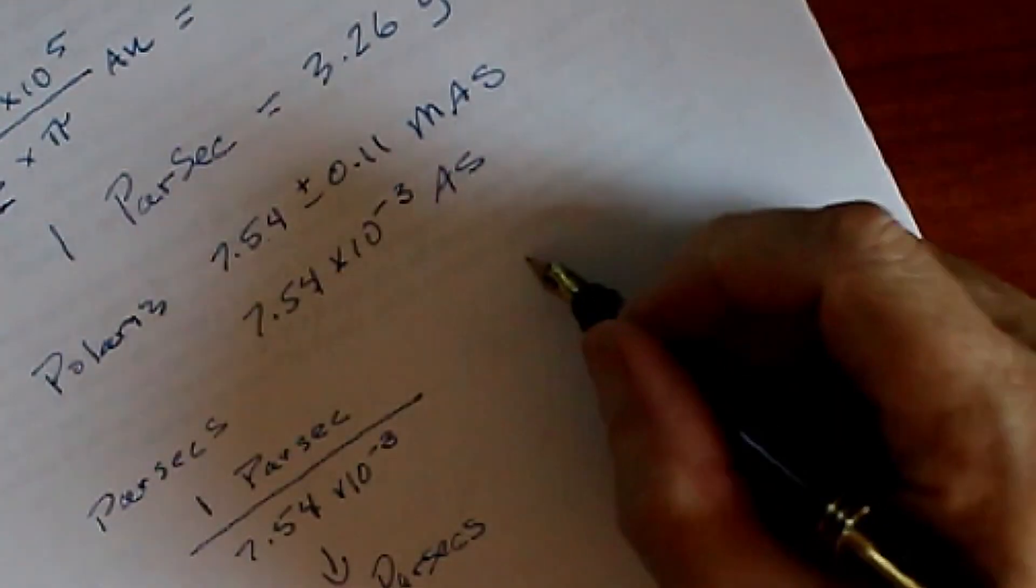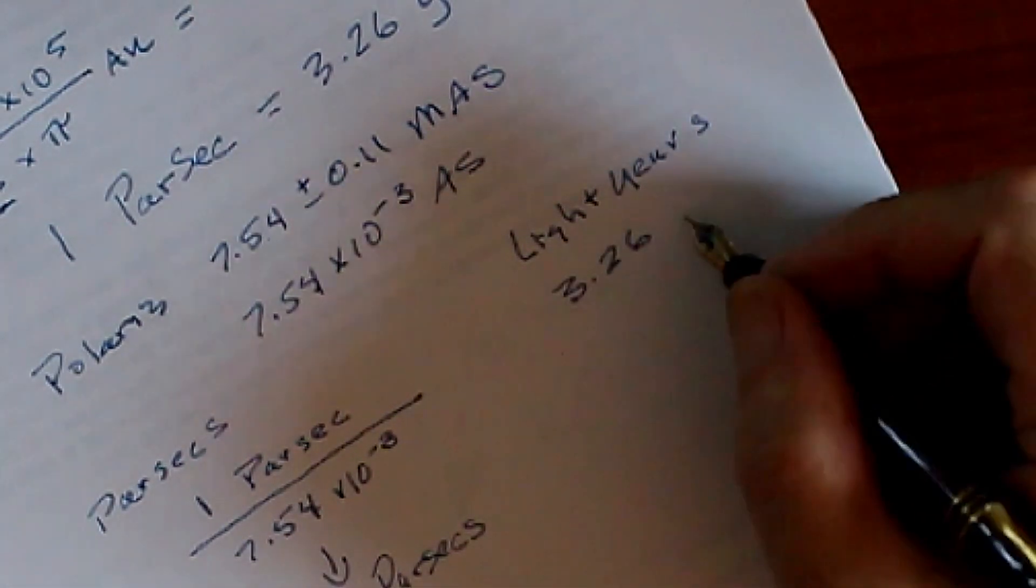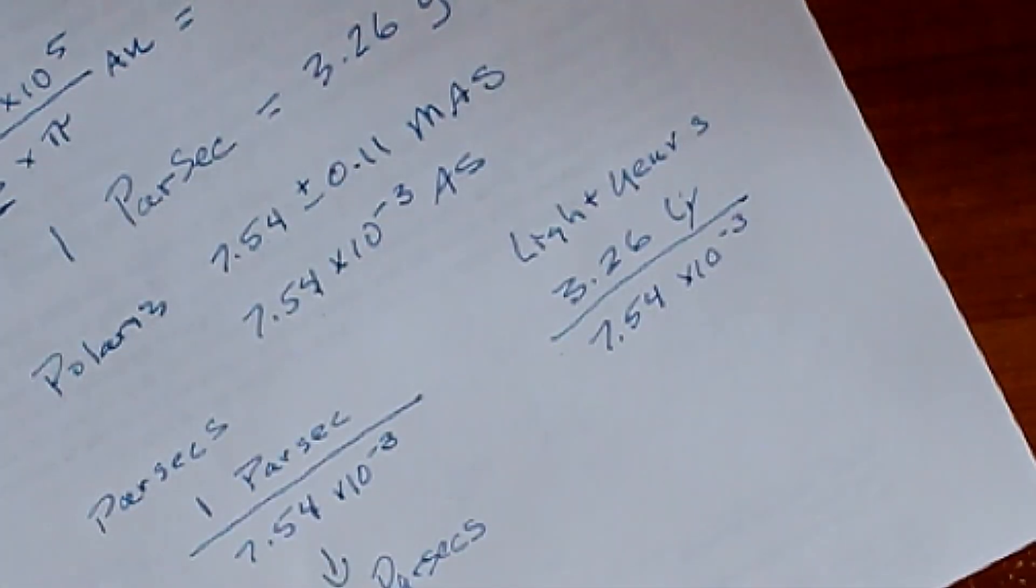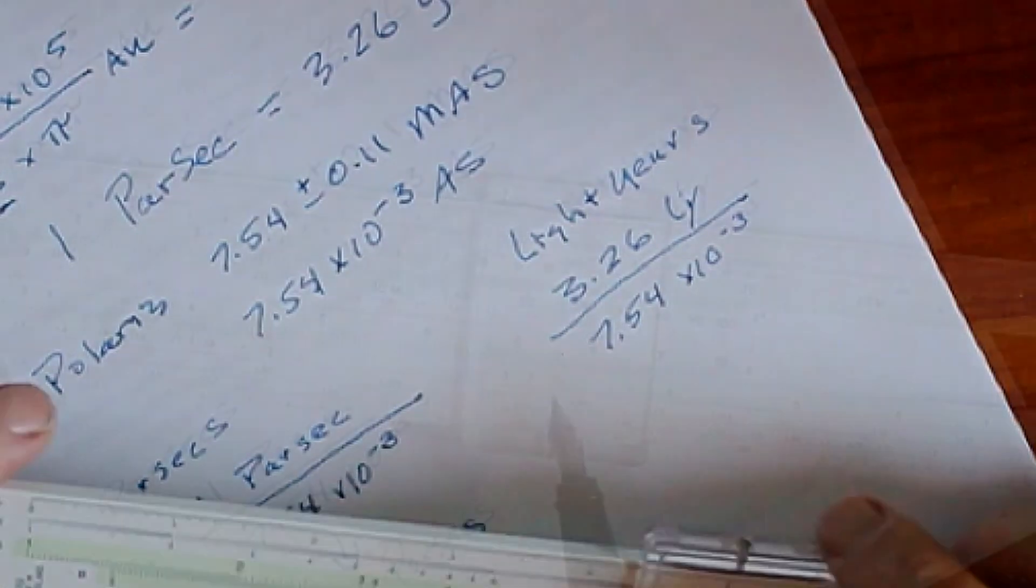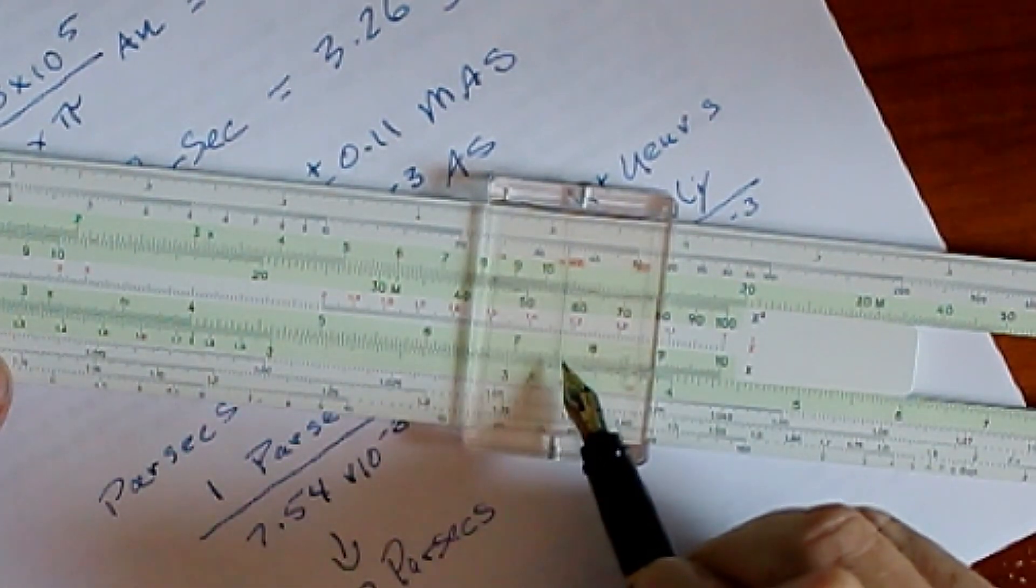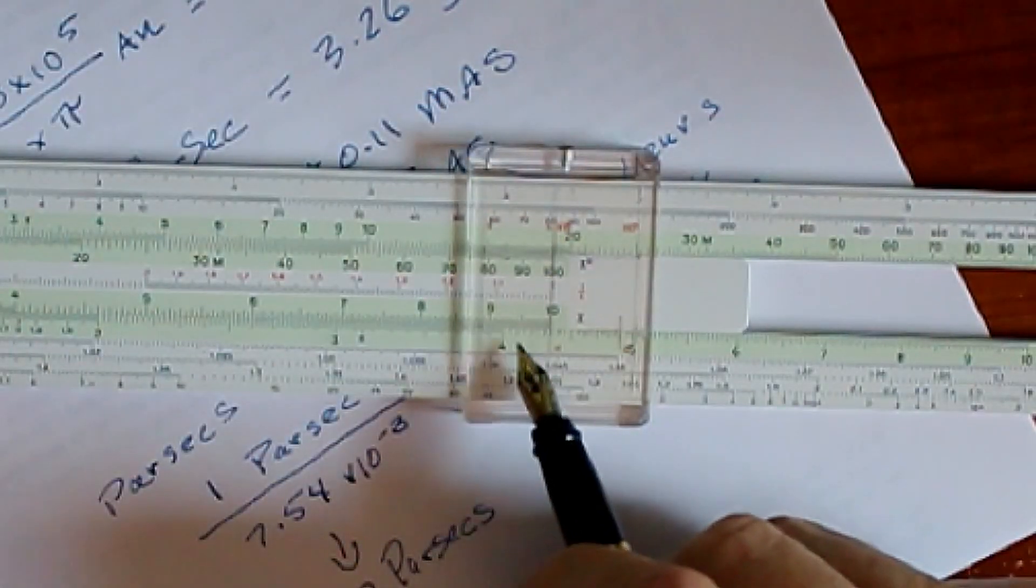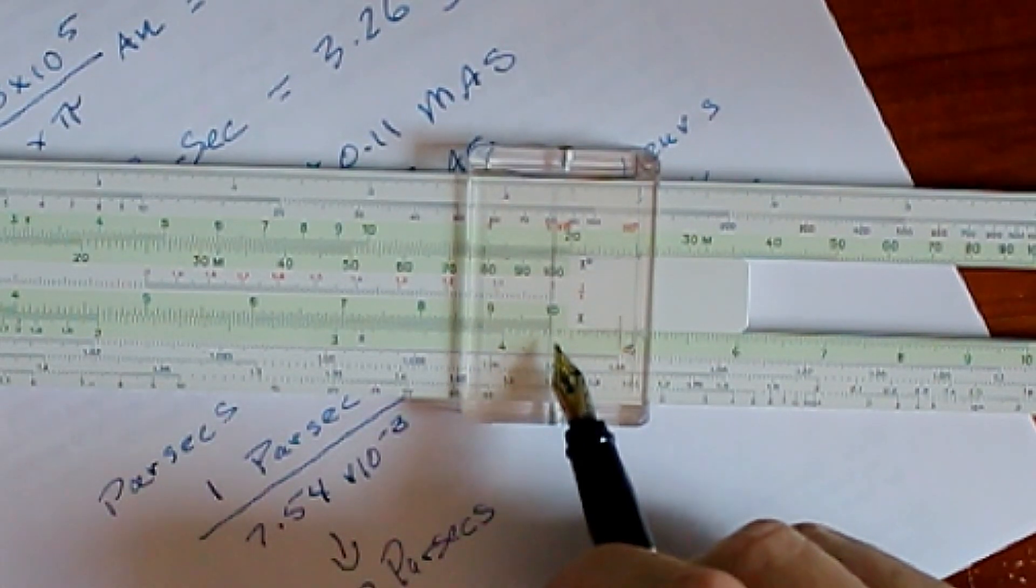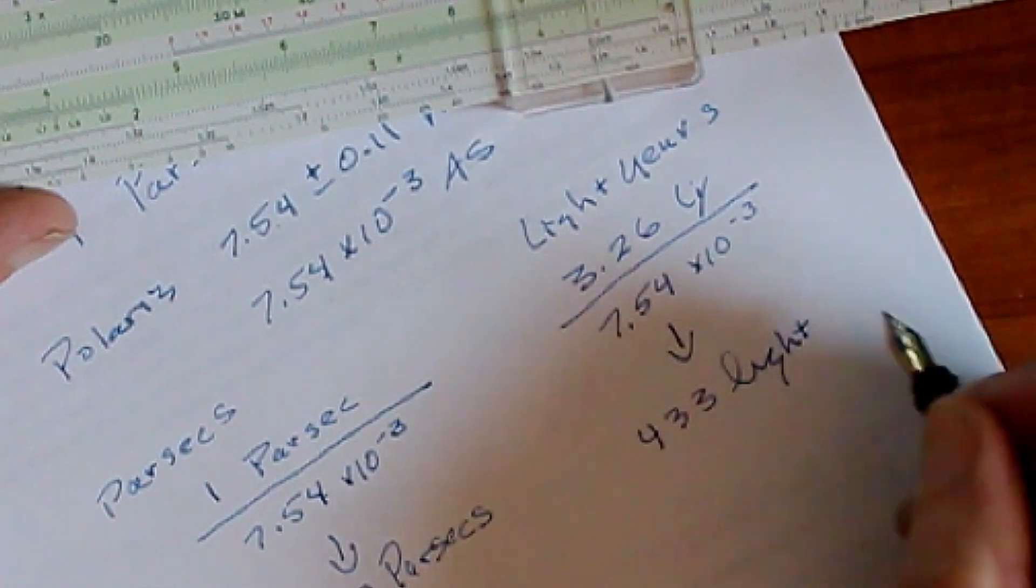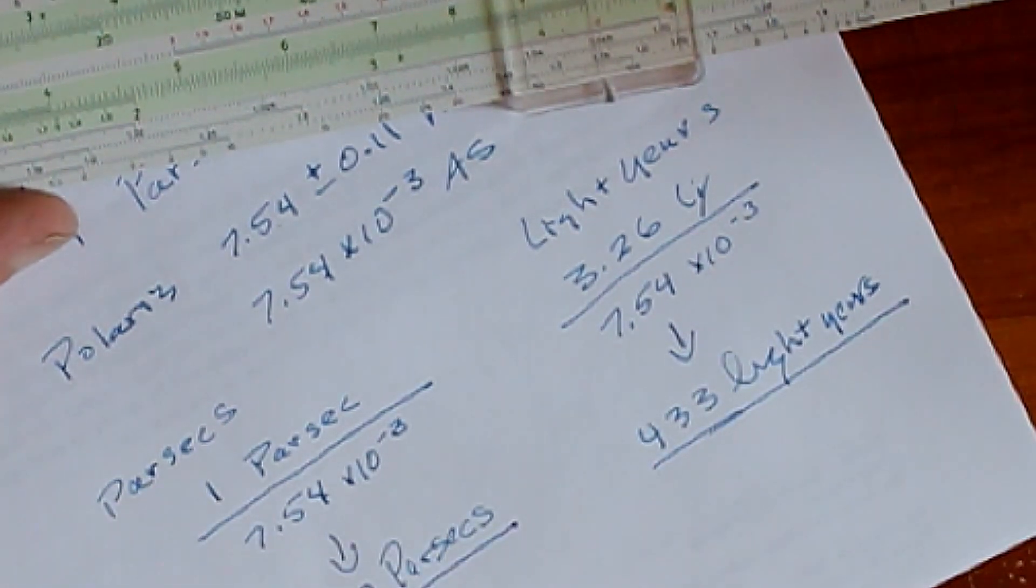Likewise, we can do it with light years. We'll take 3.26 light years, divide that by 7.54 times 10 to the negative 3. We'll do that right here. So once again, the number that we're doing something to is 3.26. What are we doing to it? We're dividing it by 7.54. Here's our answer right here. So that's 4, 1, 2, 3, about 3. So the answer here is 433 light years. And that's the distance to Polaris.